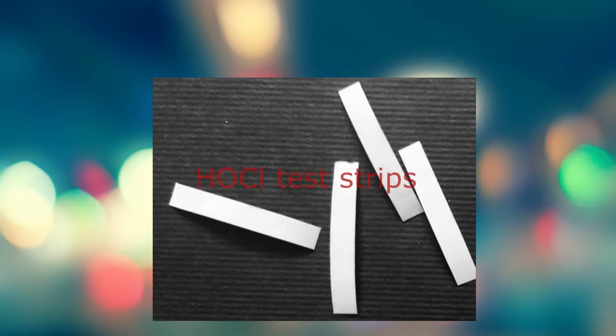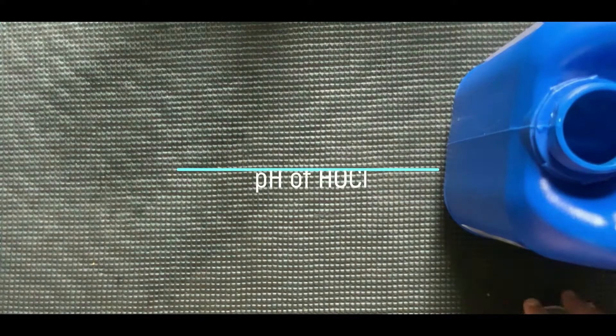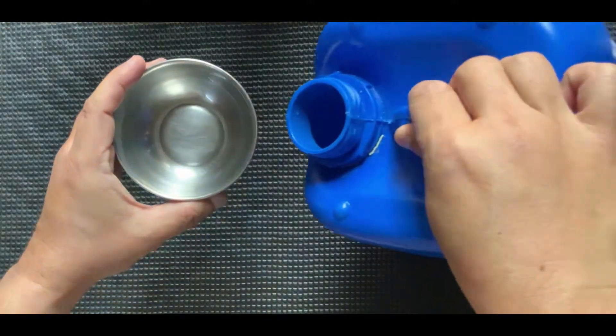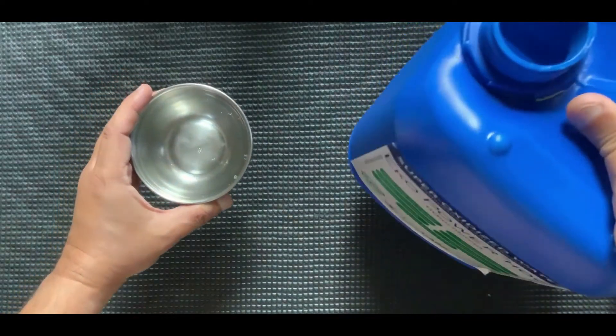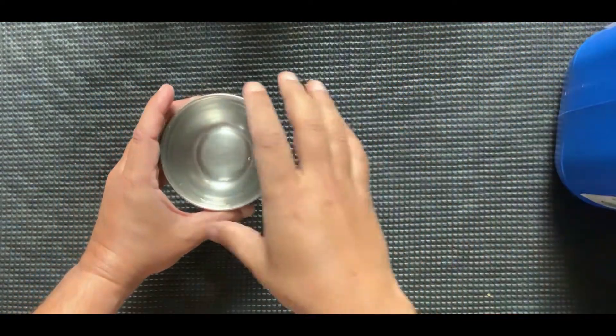pH Test Kit. HOCL Test Kit. Let's check the pH of HOCL. Take out HOCL from the 5 liter can into a small utensil like a bowl or a glass.